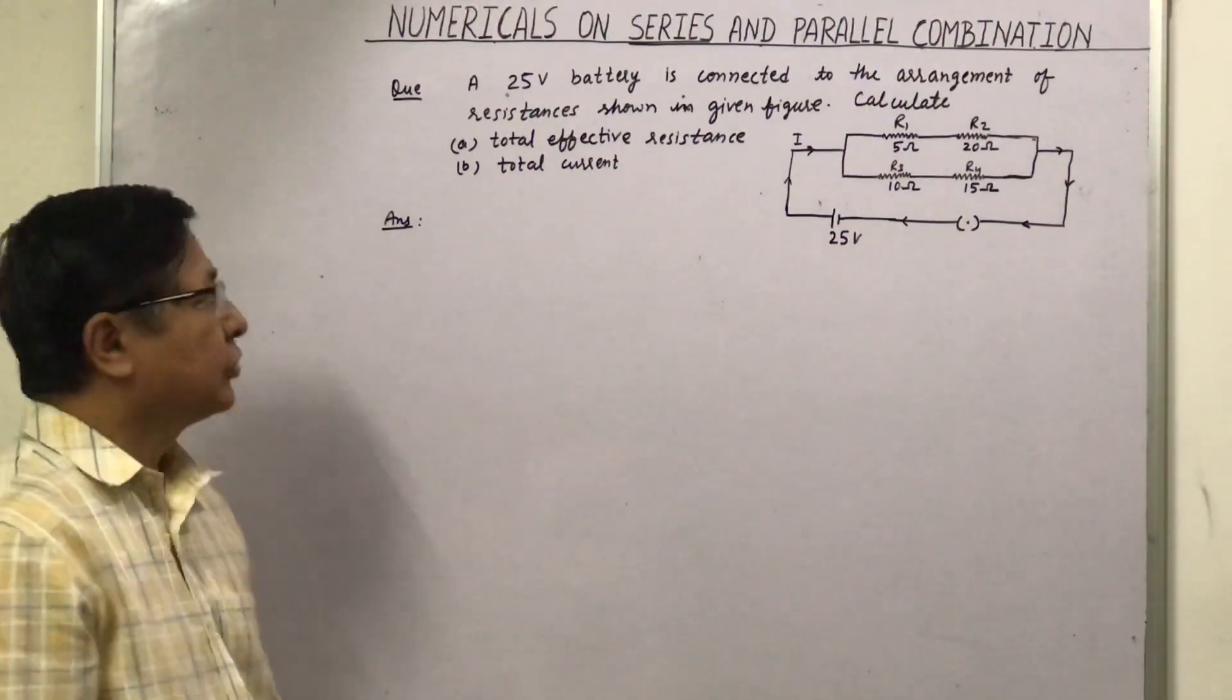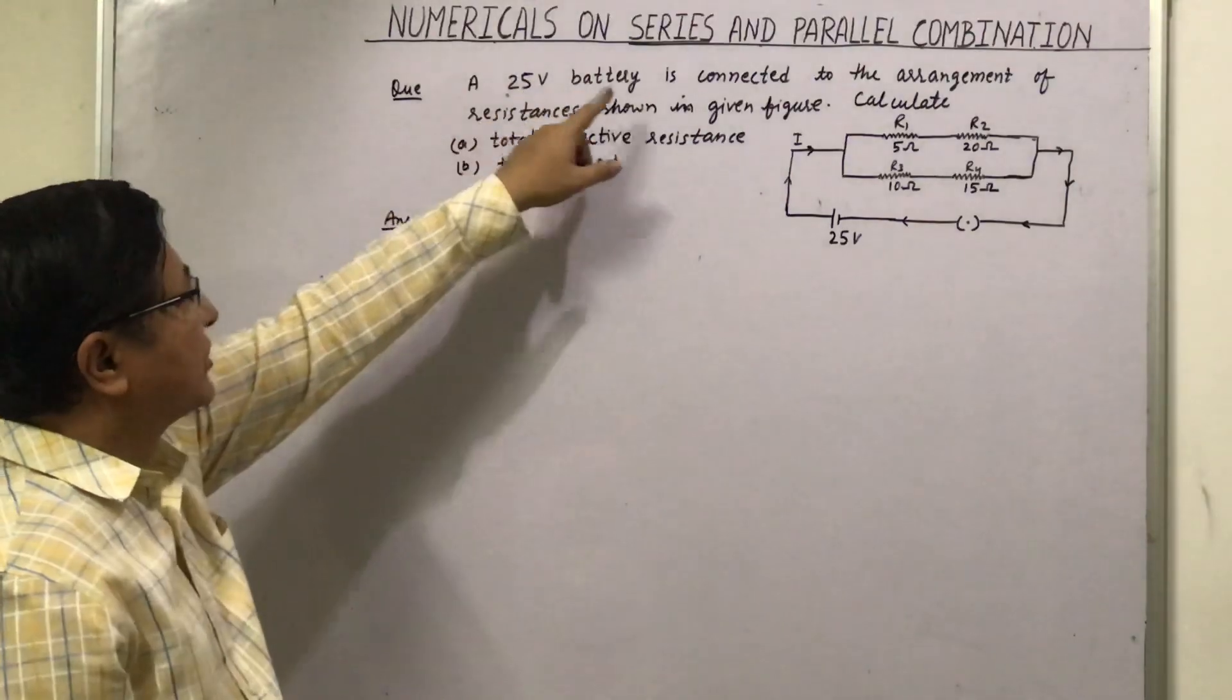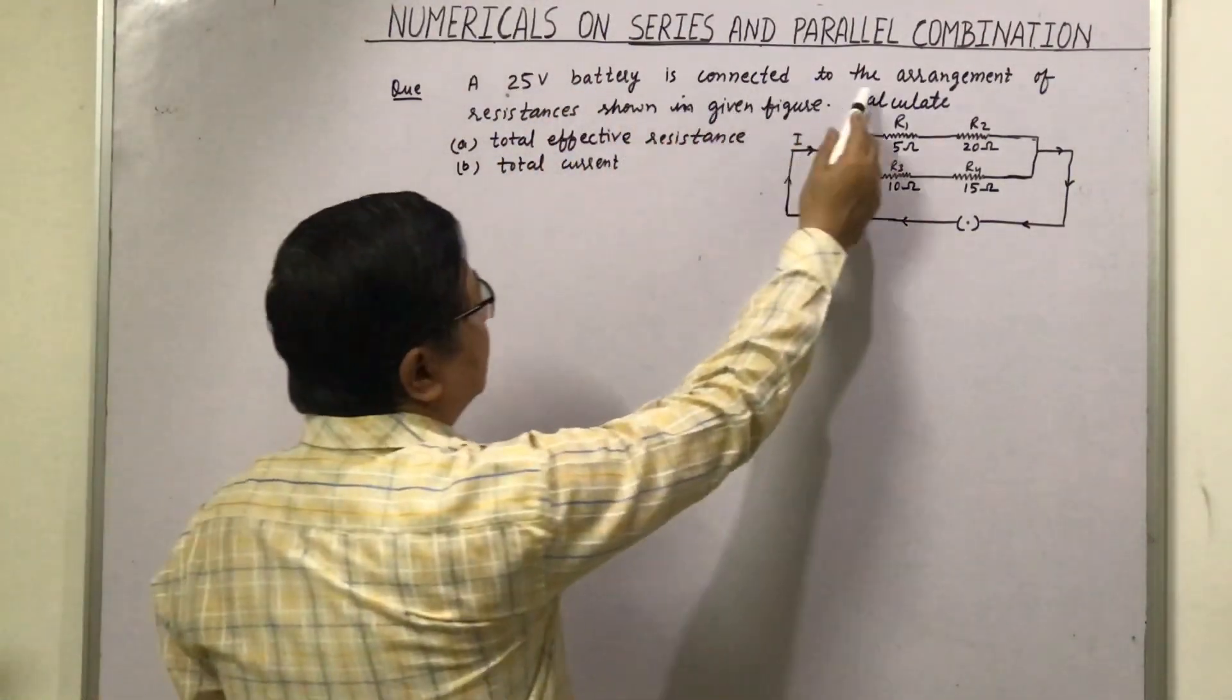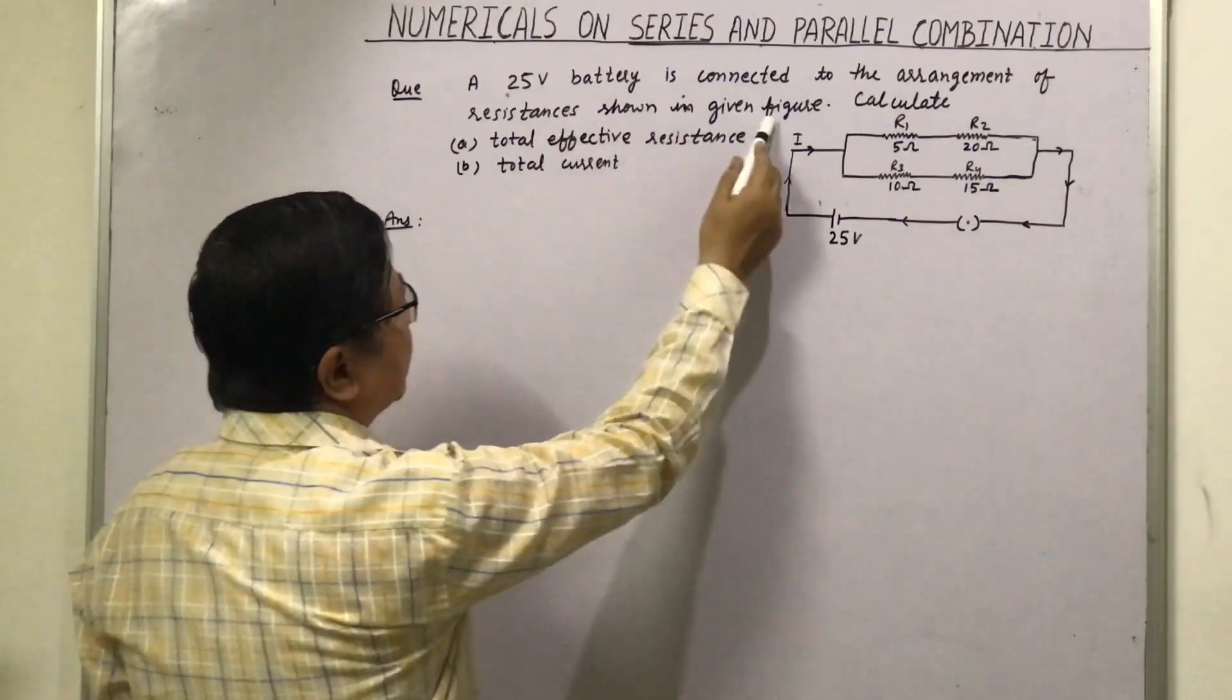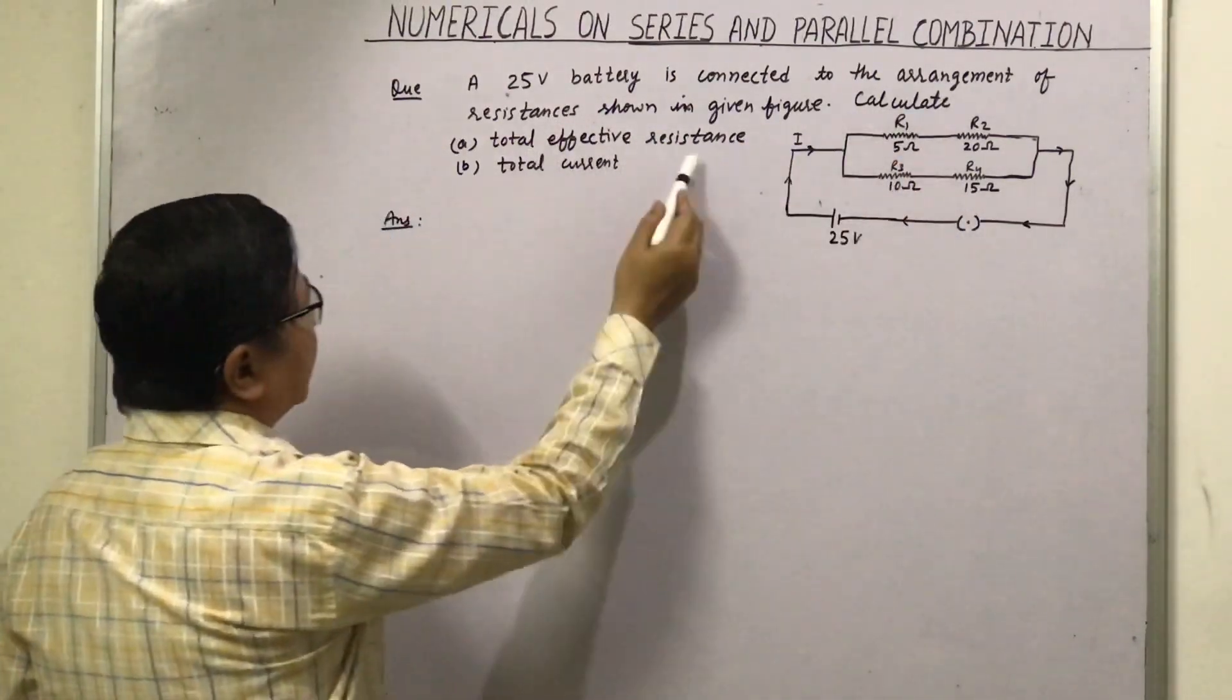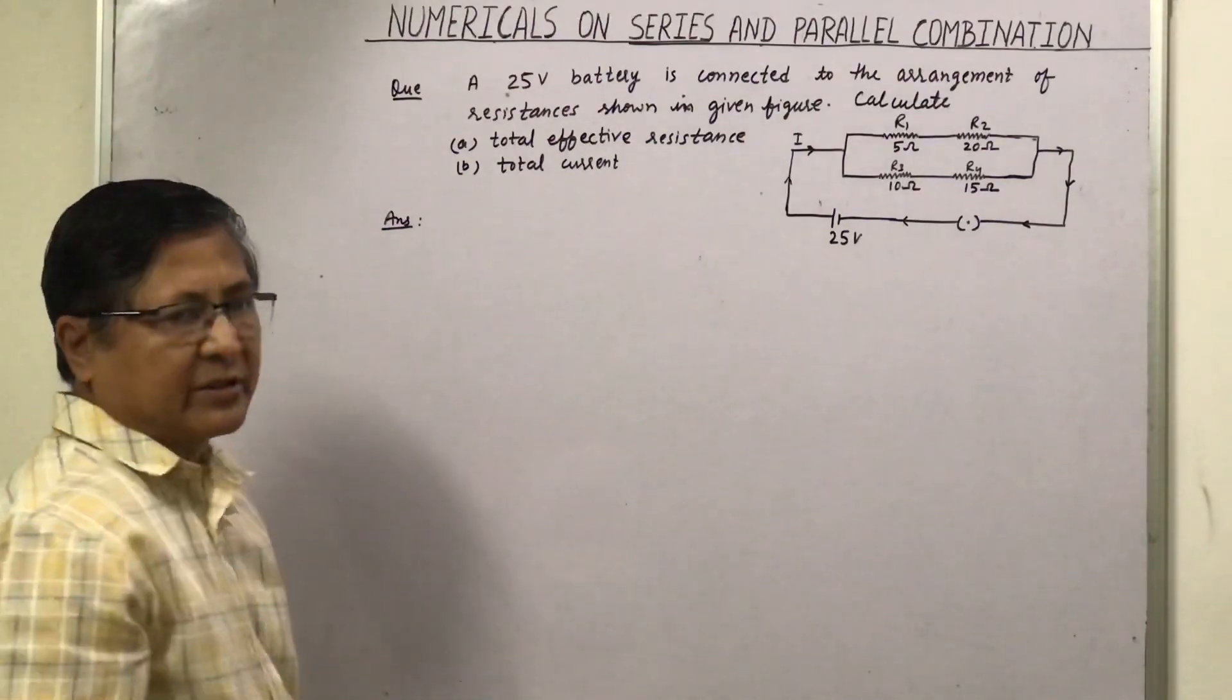Now let us take one question on numericals on series and parallel combination. A 25 volt battery is connected to the arrangement of resistances shown in the given figure. This figure is there, you can see. Calculate total effective resistance and total current in the circuit.